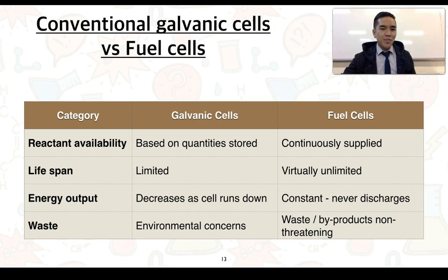What we can do is compare our conventional galvanic cells versus our fuel cells in a range of categories. And these are going to outline some of the advantages that fuel cells have over our conventional galvanic cells. So in terms of reactant availability, for galvanic cells, this is based on the quantities stored, whereas with the fuel cells, we know that they can continuously be supplied.